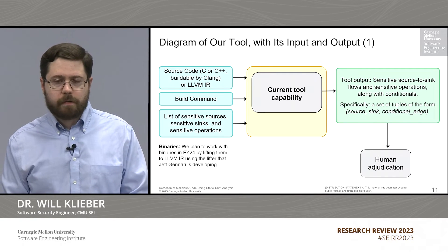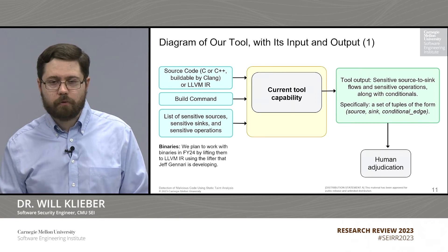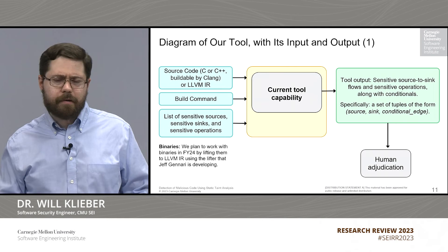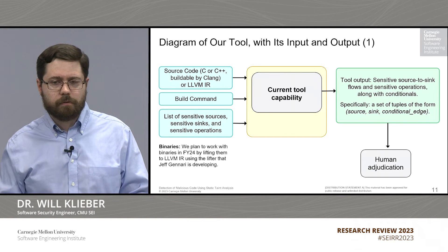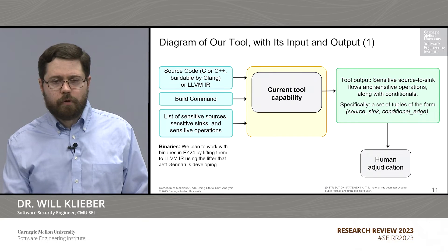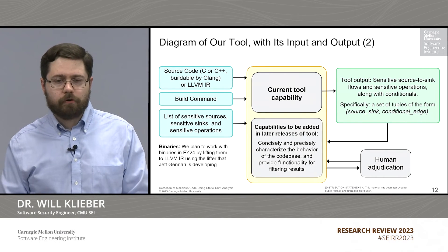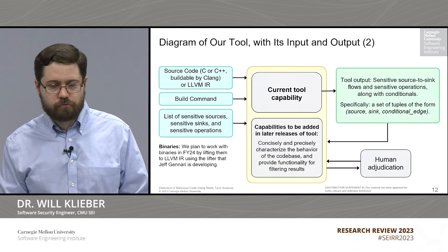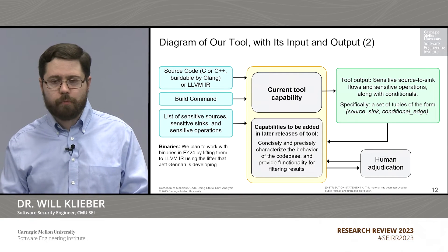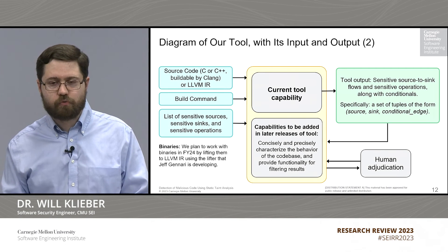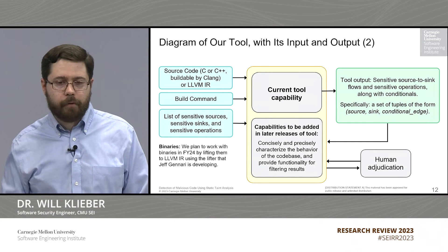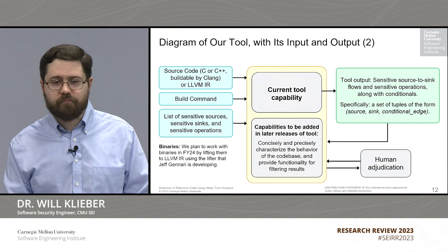Our current tool capability produces a set of tuples of the form source, sink, and conditional edge. That output is not very readily human understandable — you need to dig through the source code to use it. So what we are working on right now is to add additional capabilities to concisely and precisely characterize the behavior of the code base, providing something more human friendly that takes less time to manually adjudicate. We will also provide functionality for filtering out obvious false positives.